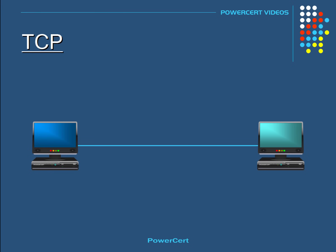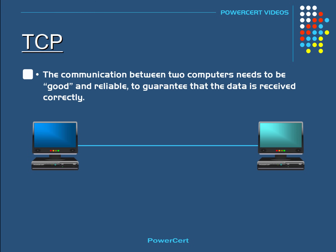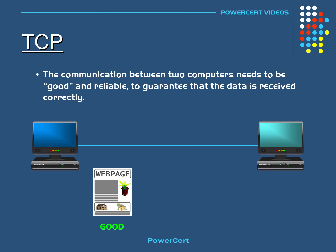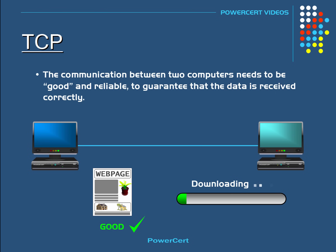Whenever a computer wants to communicate with another computer, the communication between those two computers needs to be good and reliable so we can guarantee that the data is received correctly. For example, when you want to view a web page or download a file or look at an email,